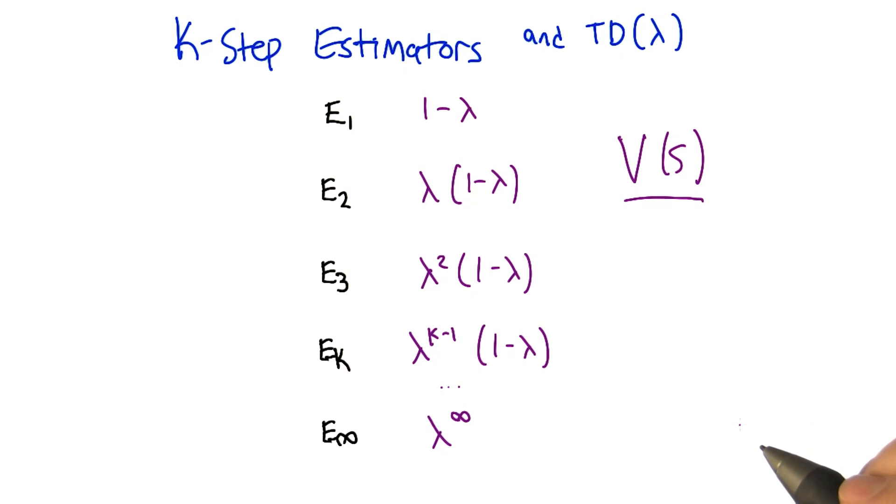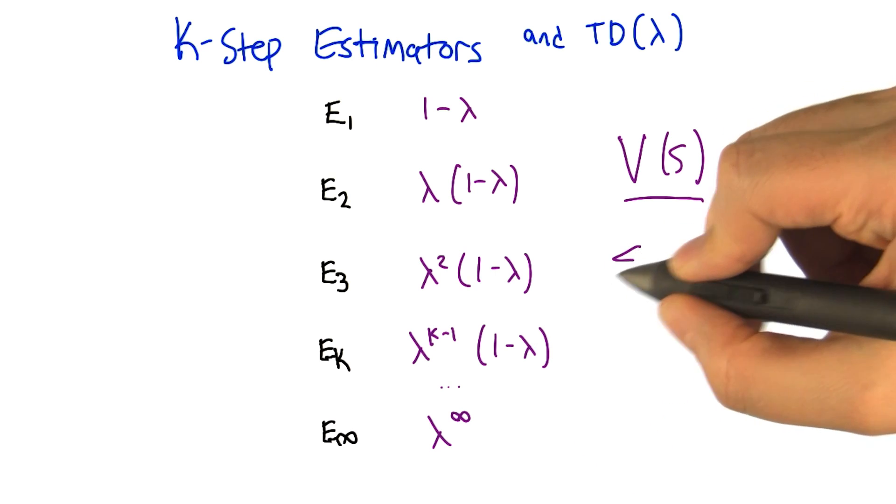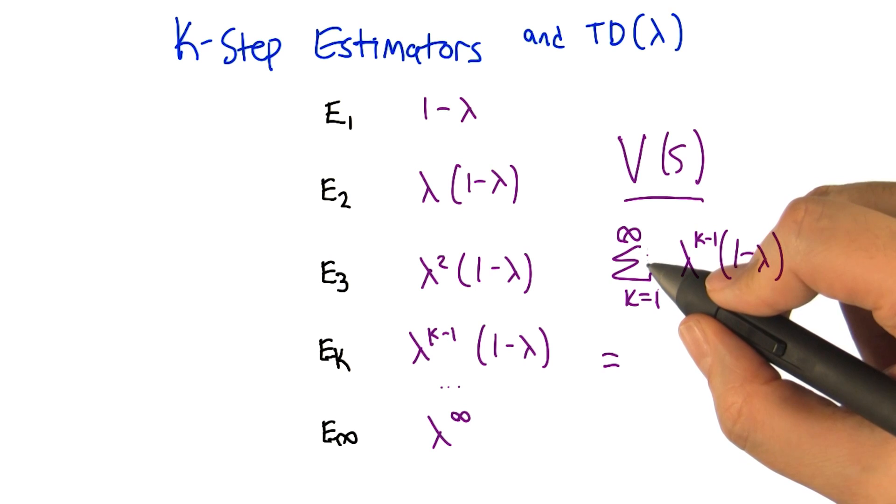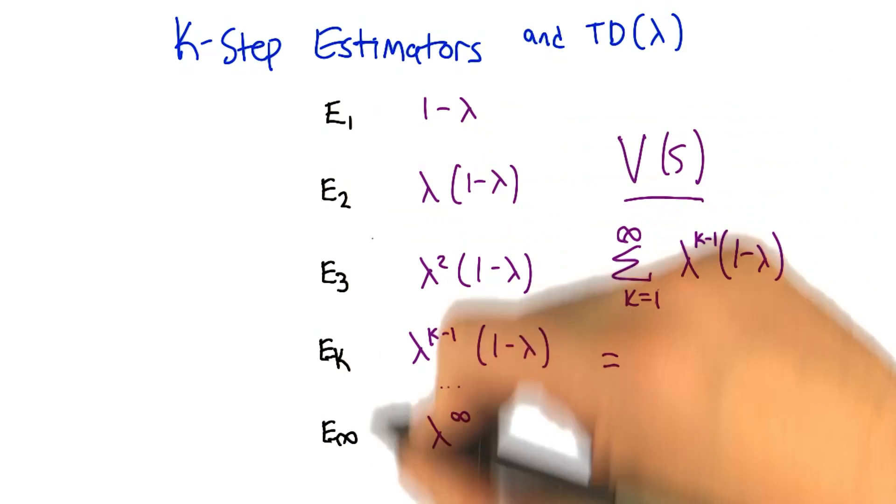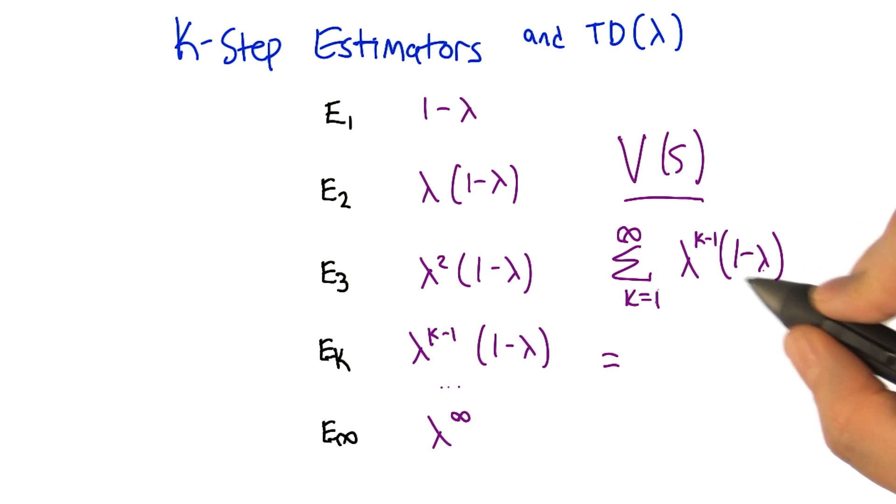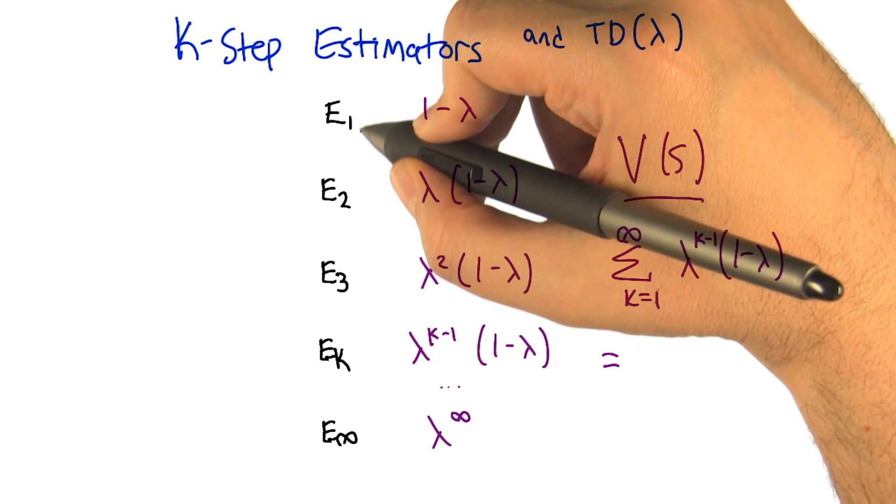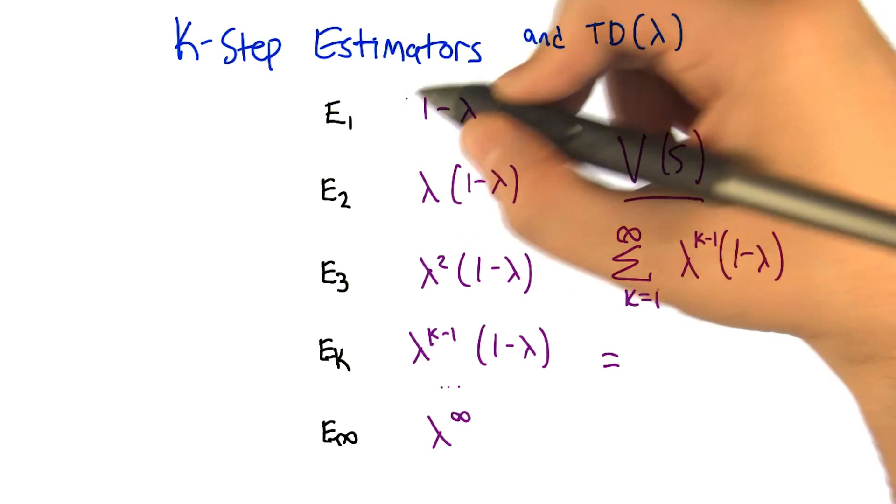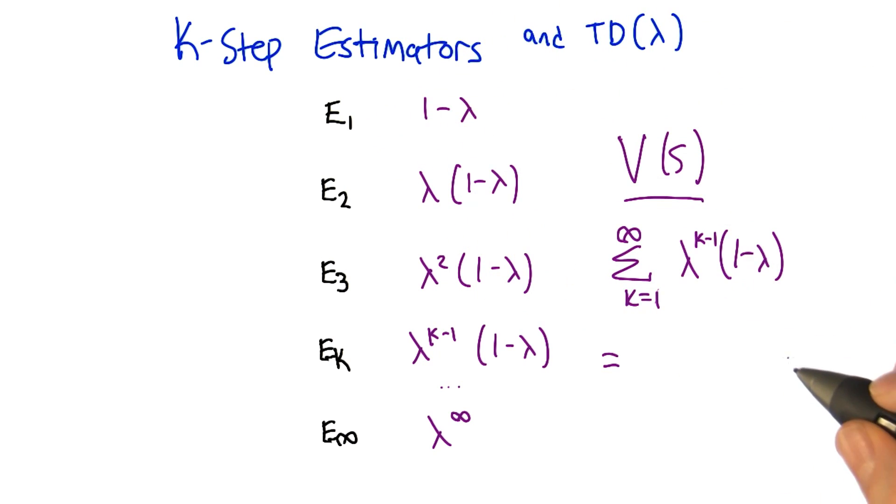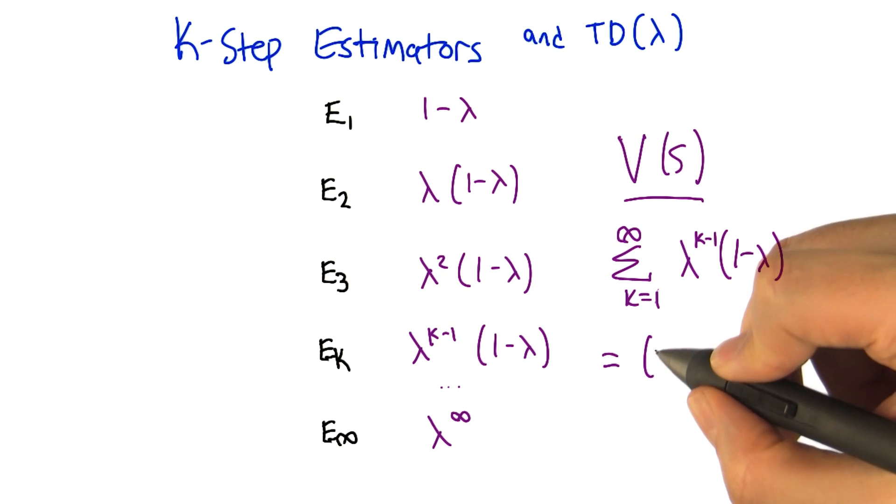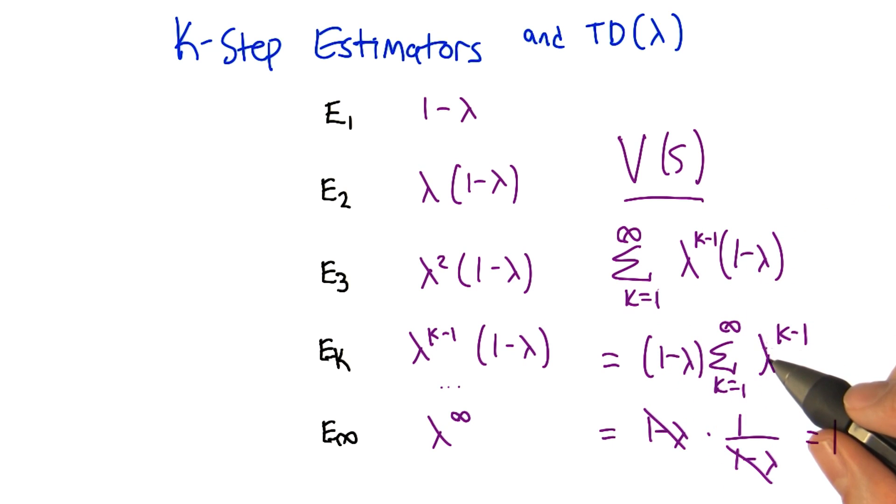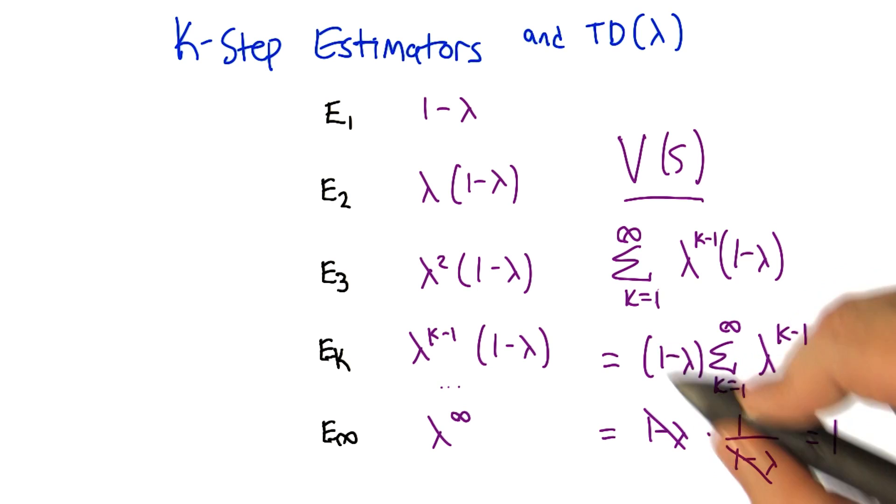So how do we do that? You write a summation. Good idea. So the summation is all the different estimators from one to infinity of the weight applied to that estimator. This formula works for all the different values of K. For K equals one it's lambda to the zero, which is one, times one minus lambda. So we can now factor out the one minus lambda. As long as lambda is less than one, we can use this as the geometric series, and we get one over one minus lambda. And that's going to cancel with this one minus lambda, and so the weights sum up to one.